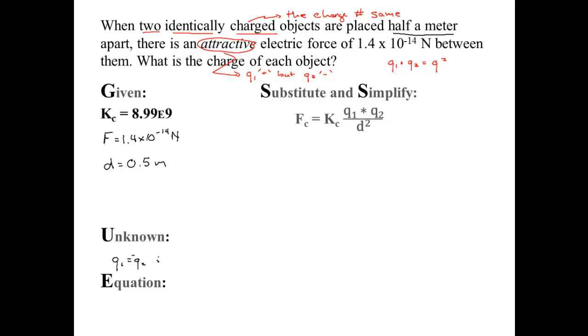Therefore, I'm going to square it. Now I'm going to replace numbers for letters. 1.4 times 10 to the negative 14, equals 8.99 times 10 to the 9.